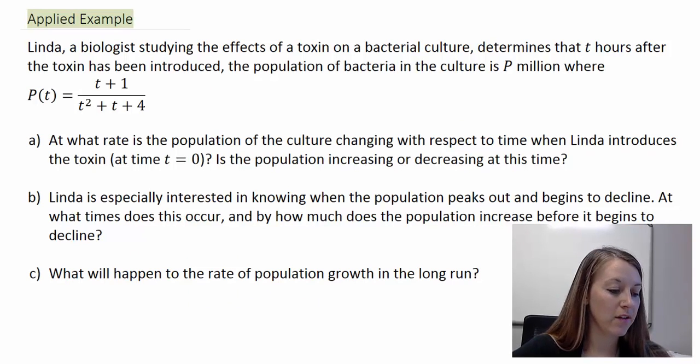The example that I have is Linda, a biologist studying the effects of a toxin on a bacterial culture, determines that T hours after the toxin has been introduced, the population of bacteria in the culture is P million where it is given by this function here. P of T is equal to T plus 1 all over T squared plus T plus 4.